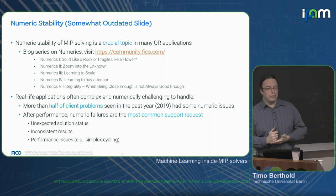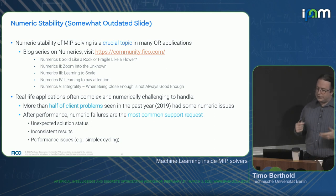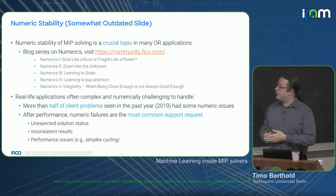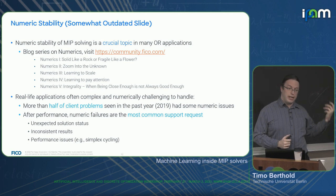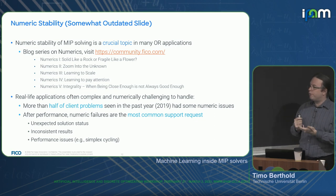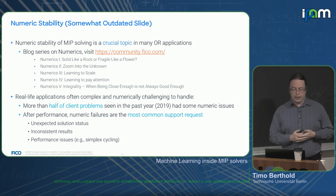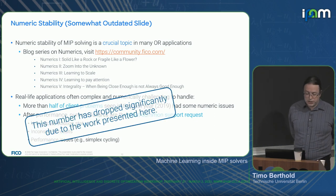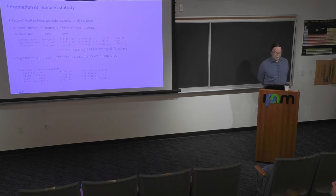There's a blog series I wrote on numerics in MIP solving with five episodes covering different aspects. Back then, more than half of the client problems that came in via support had some form of numeric issue. After performance, numeric failures were our most common support request. This has changed significantly, and the reason is learning to scale — what we present now.